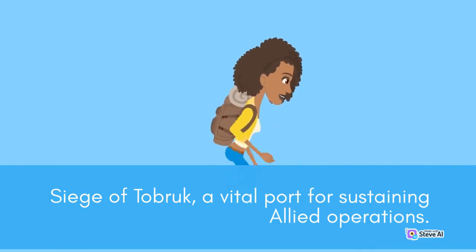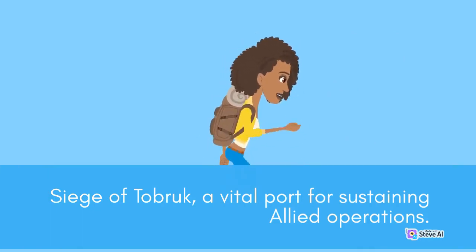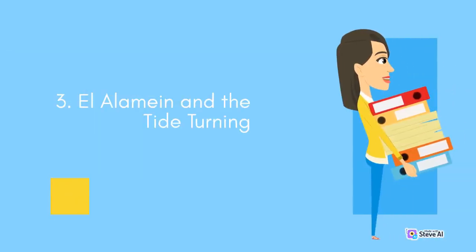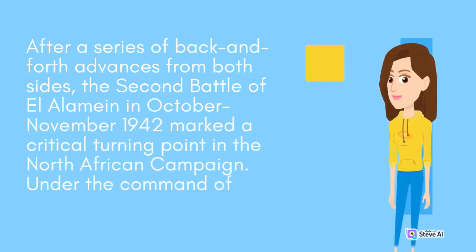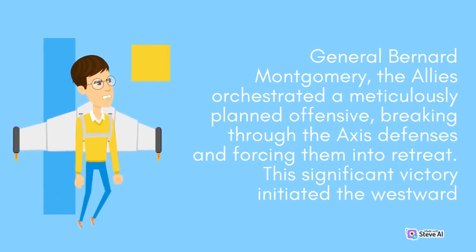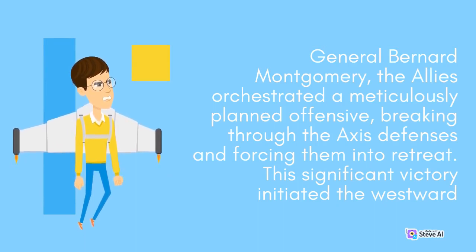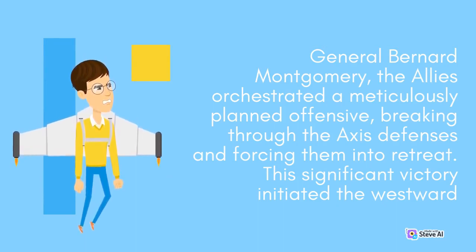El Alamein and the Tide Turning: after a series of back-and-forth advances, the Second Battle of El Alamein in October to November 1942 marked a critical turning point in the North African campaign. Under the command of General Bernard Montgomery, the Allies orchestrated a meticulously planned offensive, breaking through the Axis defenses and forcing them into retreat. This significant victory initiated the westward push towards the eventual expulsion of Axis forces from North Africa.